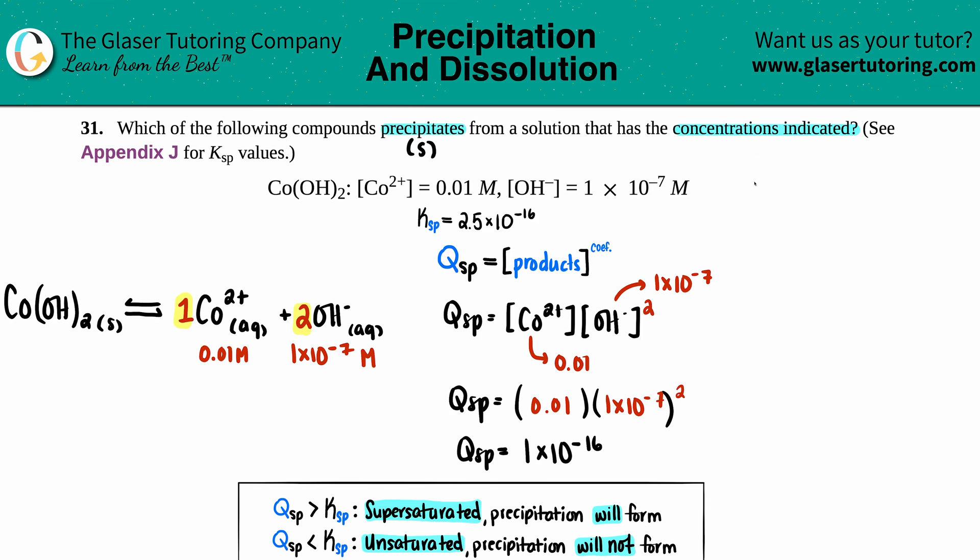The Qsp value I found was 1×10^-16, and the Ksp value we found at the back of the book is 2.5×10^-16.